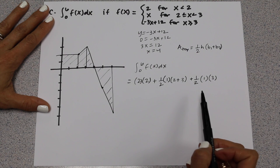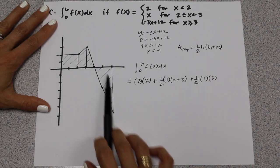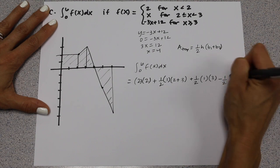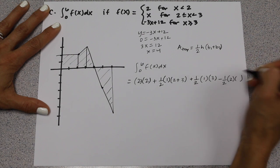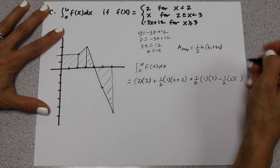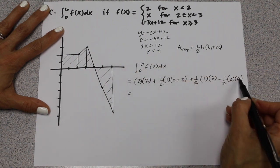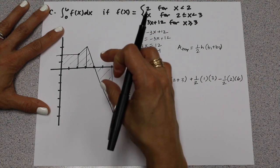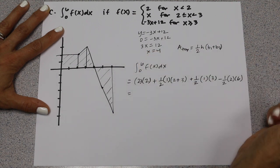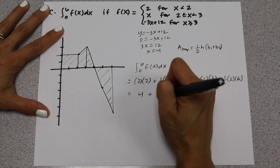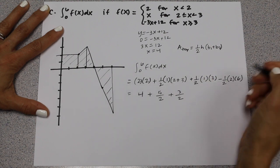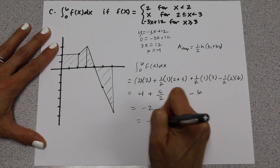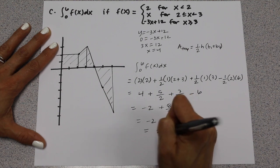That takes care of the area above the x-axis. We also have a big triangle below the x-axis, so we do minus one-half base times height. Its base is 2 and its height is 6. We put the negative in front to account for the triangle being below the x-axis. Cleaning this up: we have 3 halves minus 6 equals negative 2, then plus 8 halves which is 4, giving a final answer of positive 2.